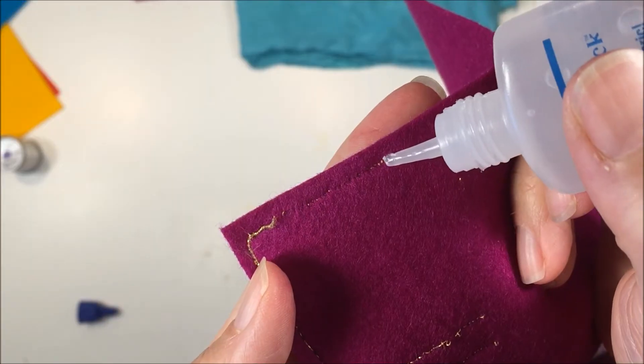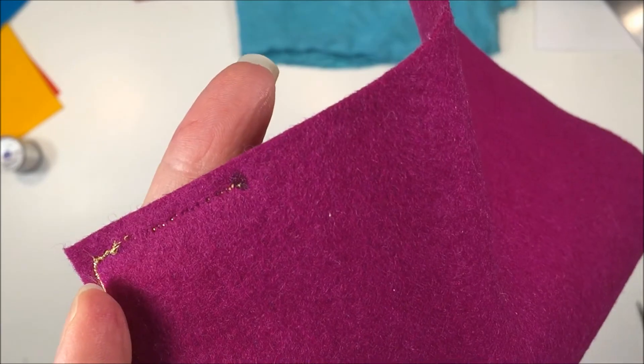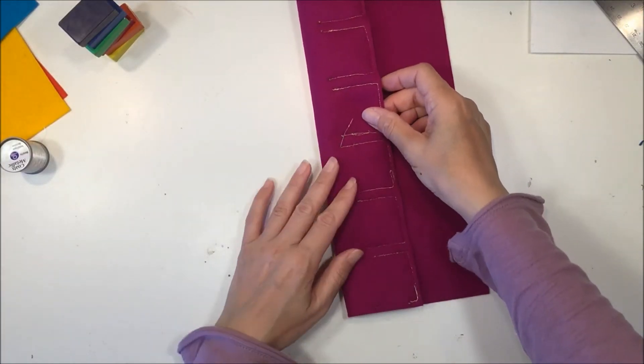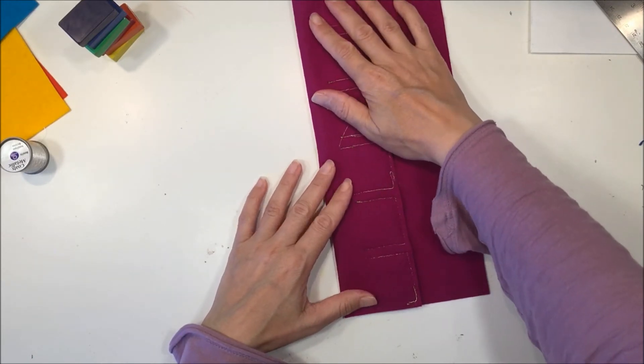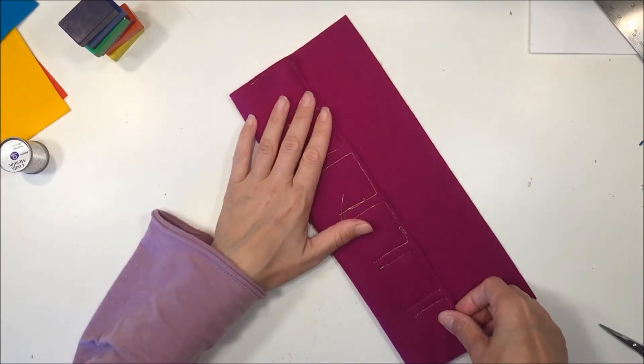When I was done trimming off all of those extra pieces of thread, I did use fray check to keep any of those little pieces from coming out. I want to make sure that that thread did stay in place even though I did back stitch quite a bit of it. It was just as a precaution.